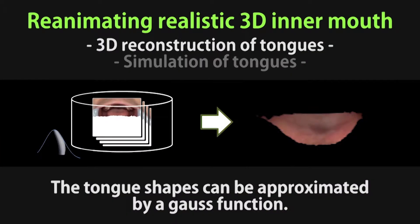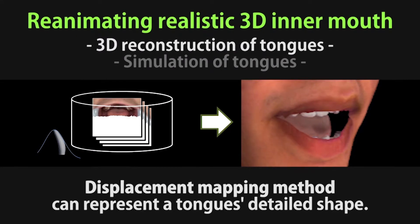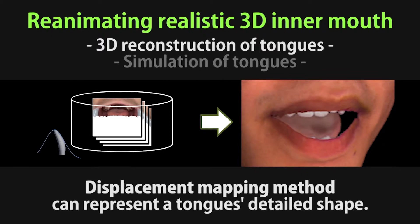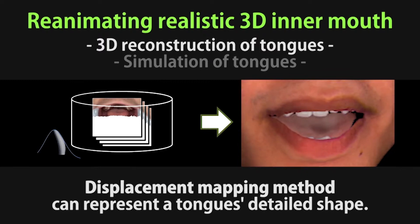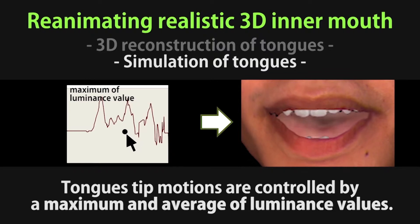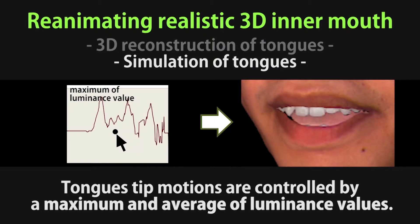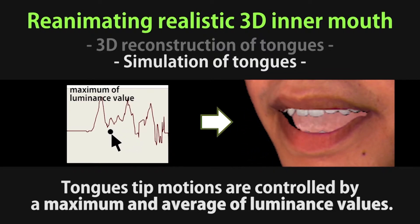The tongue shapes can be approximated by a Gauss function. Displacement mapping method can represent the tongue's detailed shape. The tongue's tip motions are controlled by the maximum and average of luminance values.